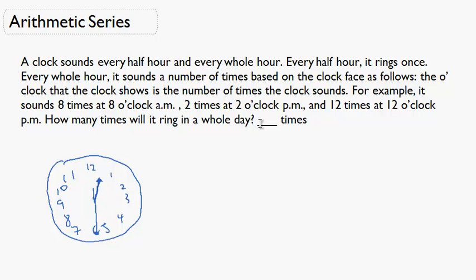Every half hour it rings once, and every whole hour it rings the number of times equal to the clock showing on the dial. For example, at one o'clock it rings once, at eight o'clock it rings eight times, at two o'clock it rings twice, at twelve o'clock it rings twelve times. The question is: how many times will it ring in a whole day?